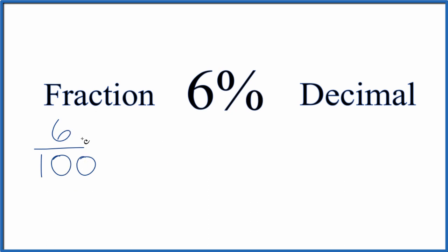We could simplify this though. These are both even numbers, so let's divide the numerator and denominator by 2. 6 divided by 2 is 3. 100 divided by 2 is 50. So we could also write 6% as the fraction 3 over 50. And this is in lowest terms.